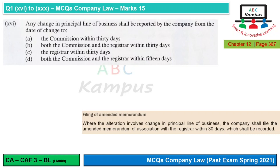Question 16: Any change in the principal line of business shall be reported by the company from the date of change. The concept of principal line of business requires us to inform the Registrar within 30 days. Therefore, our correct option is C.